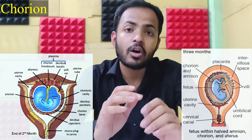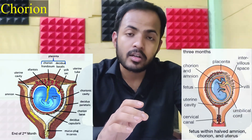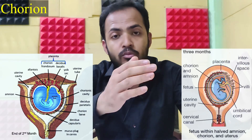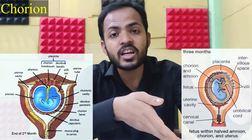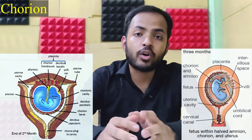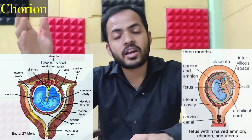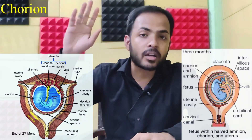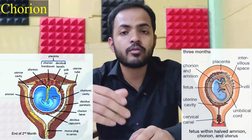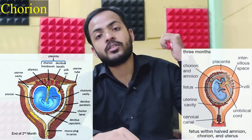The villi of the Chorion on the side of the decidua capsularis slowly disappears and forms a smooth part, also known as Chorionic laeve. The villi of the Chorion on the side of the decidua basalis further grows, develops, and gives branching patterns — that is known as Chorionic frondosa. These were already discussed in earlier placenta videos.